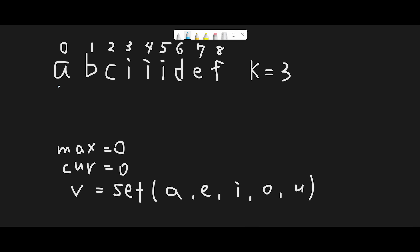We use one pointer — a right pointer r — starting from index zero. We iterate through all characters one by one. The current character is 'a'. We look at the vowels set and since 'a' is in it, we add plus one to current_vowels, making it 1. Then we compare max_vowels zero versus current_vowels one, so we update max_vowels to 1, and then move to the next character.